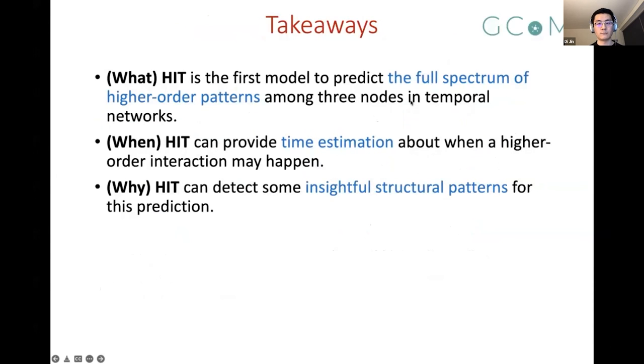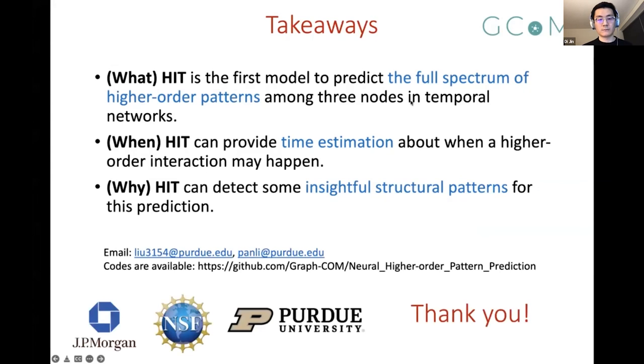Now I would like to conclude our talk here. The three takeaways about this talk are as follows. Our model HIT is actually the first model that is able to predict the full spectrum of higher order patterns among three nodes in temporal networks. Our model can also provide time estimation about when a higher order interaction may happen. Our model can also detect or find insightful structural patterns for the prediction it makes. To know more about our work please check our paper and the codes. If you have questions feel free to drop us messages. And finally, I would like to thank your attention and thank the agencies that funded this project.